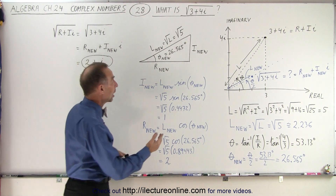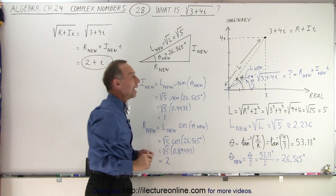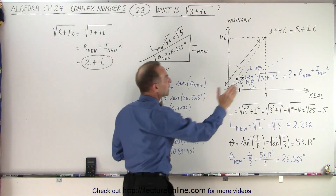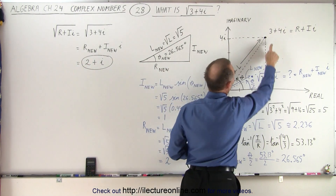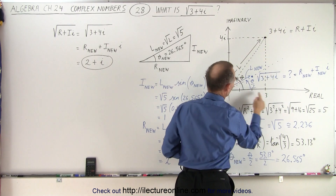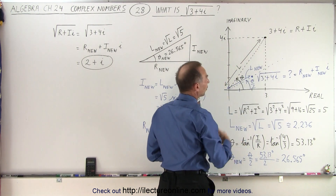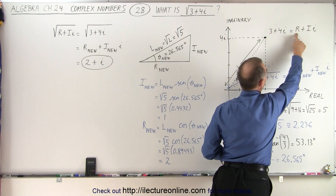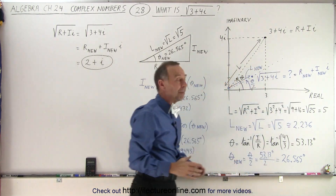To show you, we're going to use the complex number 3 plus 4i, and we're going to take the square root of that. First, we place that complex number on the real-imaginary plane. We realize that the real part is 3, and the imaginary part has a length equal to 4. So we have our complex number, and we can write it in the general form where r is the length of the real part and capital I is the length of the imaginary part.